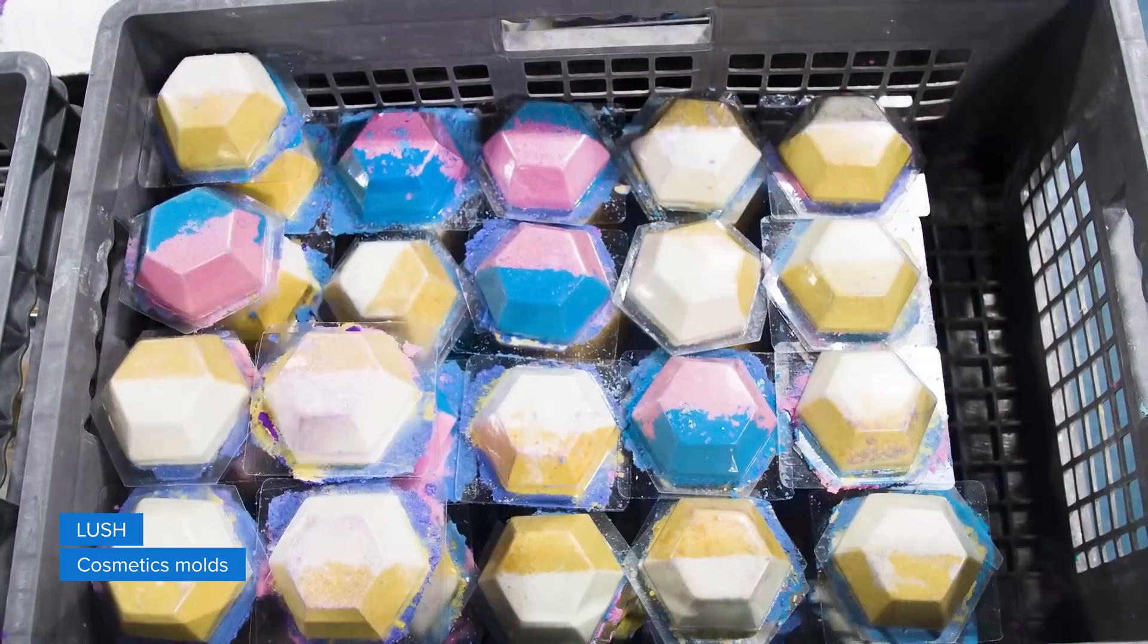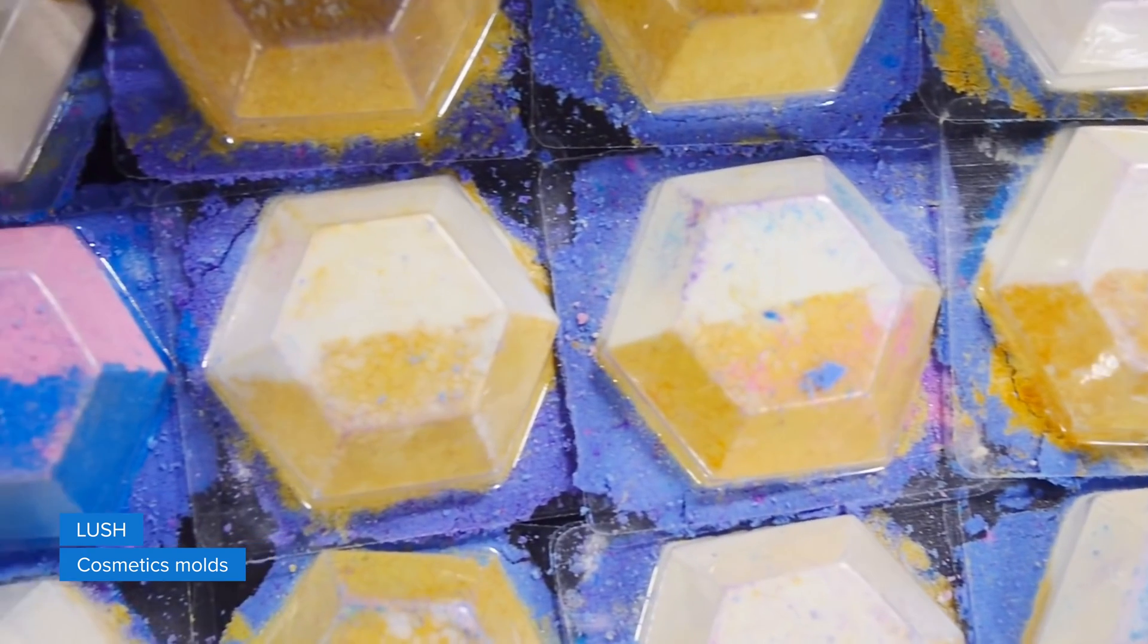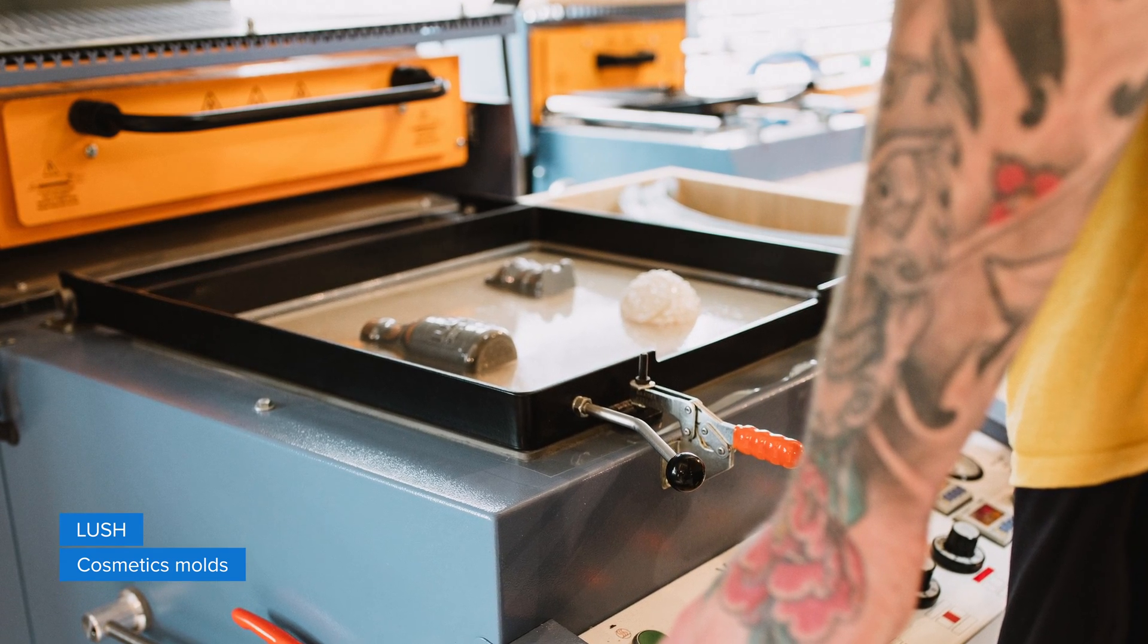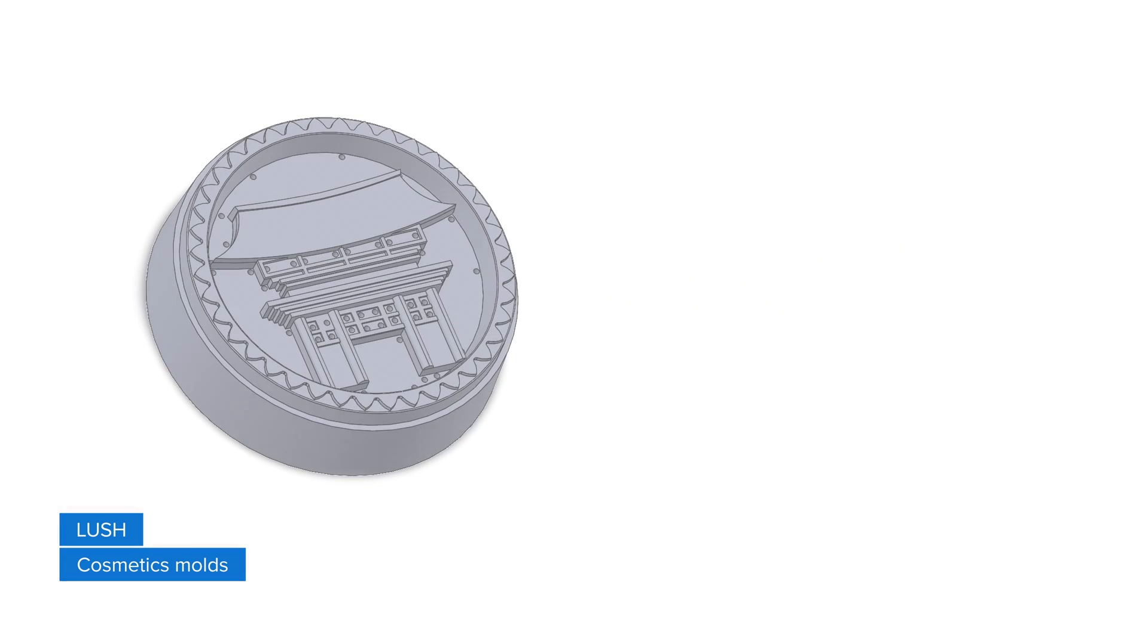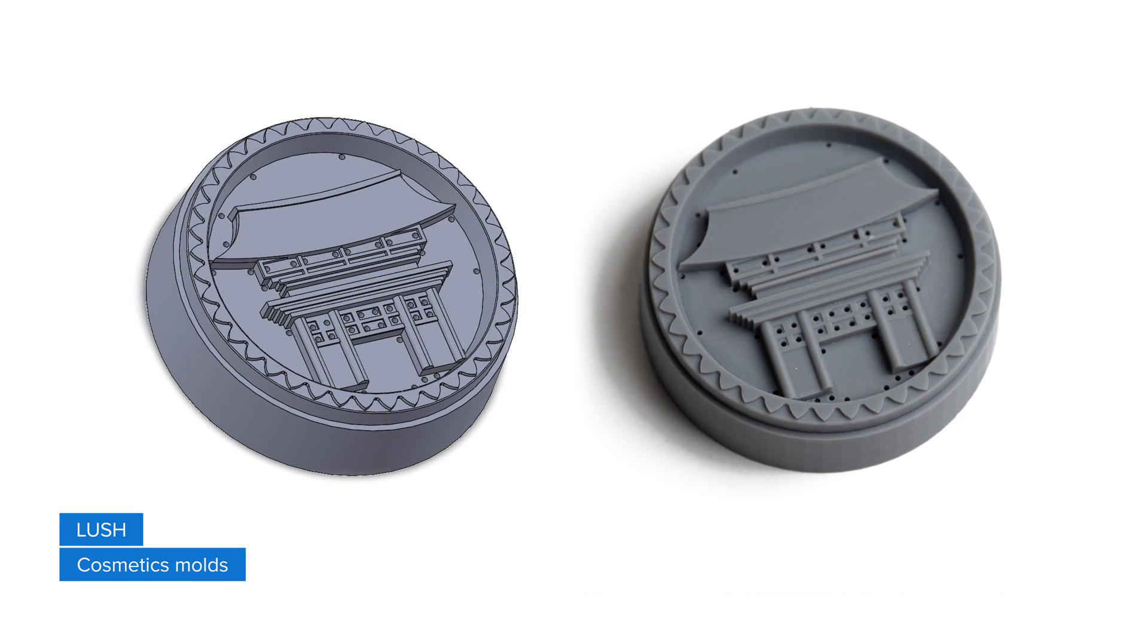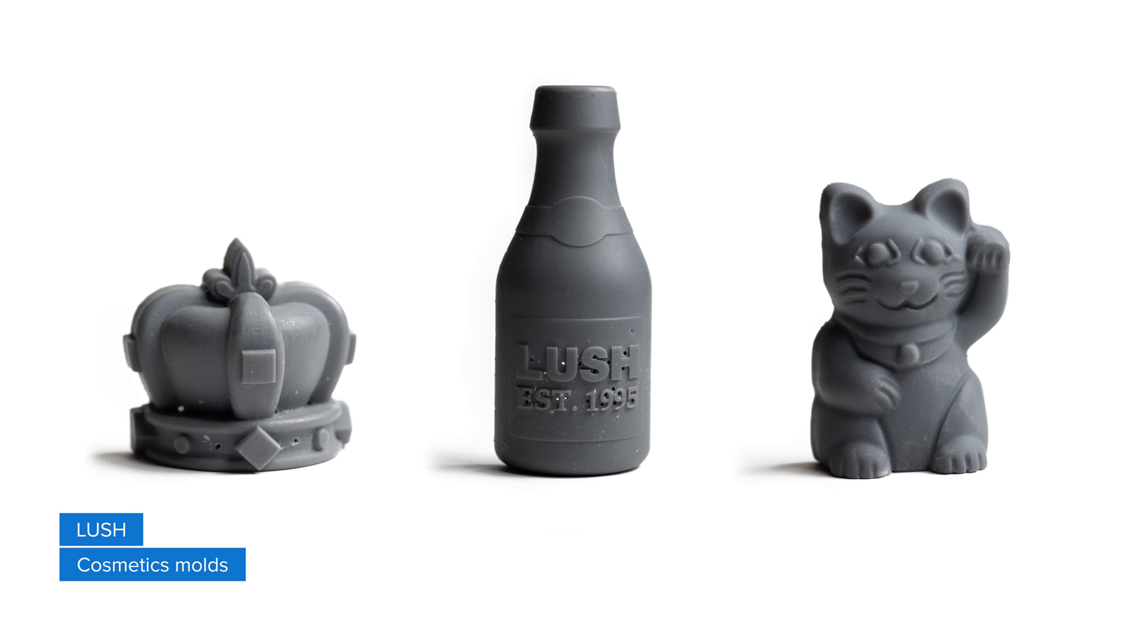Cosmetics manufacturer Lush used to craft the master molds for their hugely popular products by hand, but recently they turned to 3D printing to create vacuum forming molds for detailed and textured designs, which allows them to take ideas from concept to reality in under 24 hours and test more than a thousand designs each year.